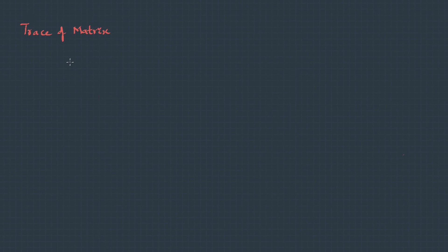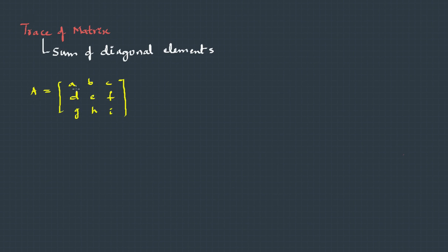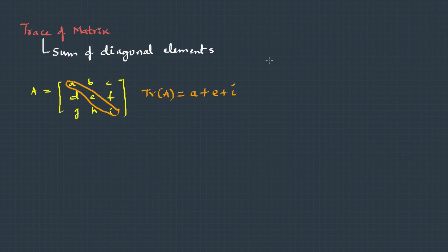The trace of a matrix is the sum of the diagonal elements. For a matrix A with elements a, b, c, d, e, f, g, h, i, the trace is the summation of these diagonal elements, so the trace of A is a plus e plus i.